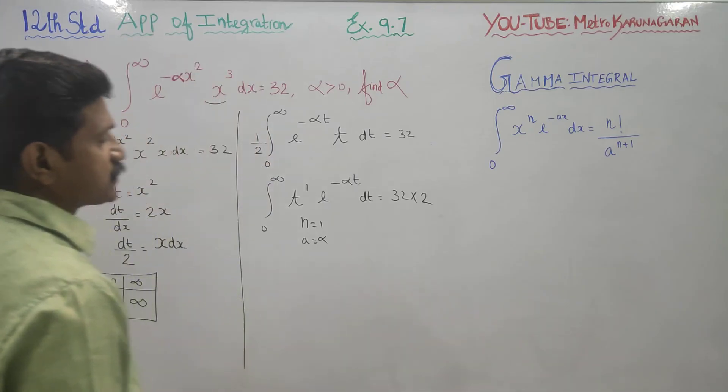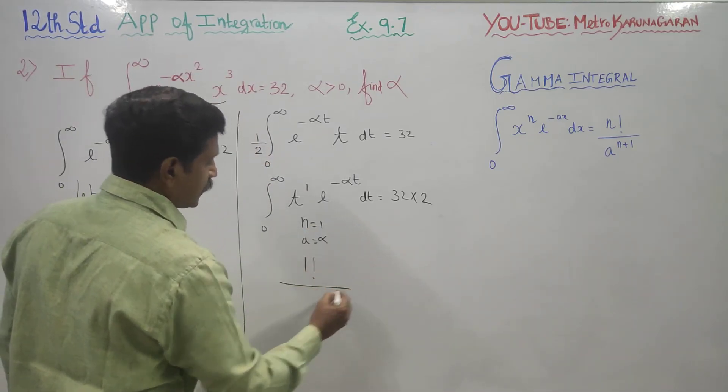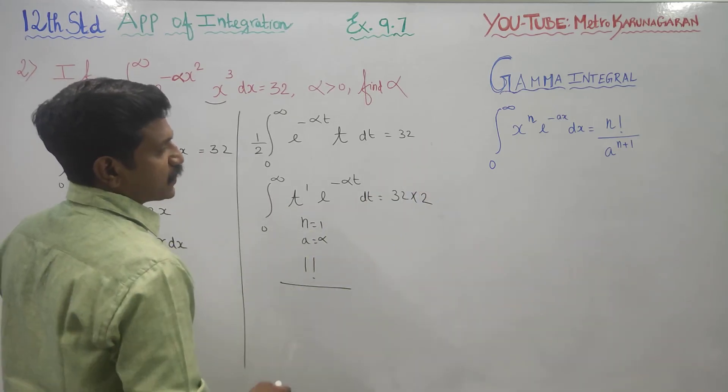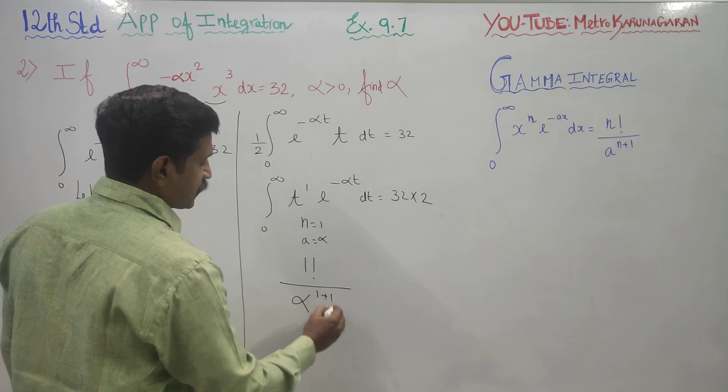N factorial by a to the power n plus 1. My n factorial is 1 factorial by a to the power n plus 1, which is alpha to the power 2, equals 64.